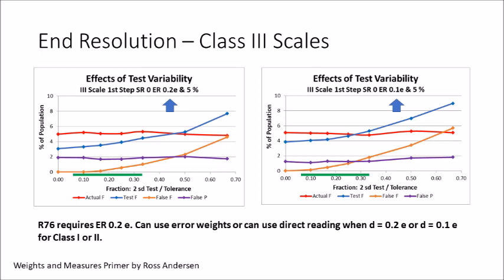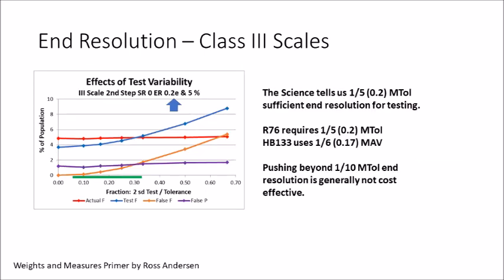You can use error weights or direct reading when D equals 0.2e, or 0.1e for class 1 and 2. Here's the second tolerance step reduced to 0.2e resolution — this gives us back our normal figure where false positives and false negatives are about the same. The science tells us that one-fifth of the maintenance tolerance as a resolution for testing is about the lower limit. R76 requires one-fifth, and Handbook 133 actually uses one-sixth, about the same thing. Pushing beyond one-tenth of the maintenance tolerance is generally not cost-effective.